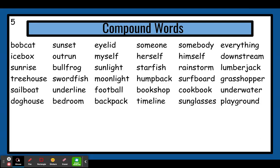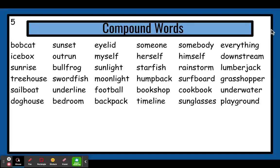Let's read this line. Try and read it before I do. Icebox. Outrun. Myself. Herself. Himself. Downstream.